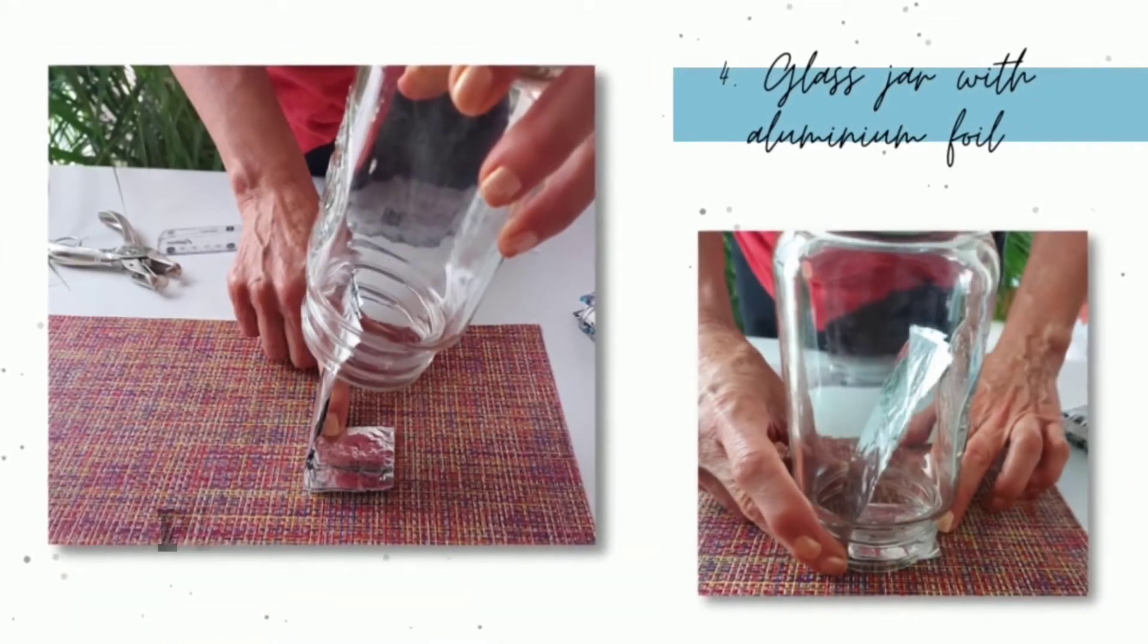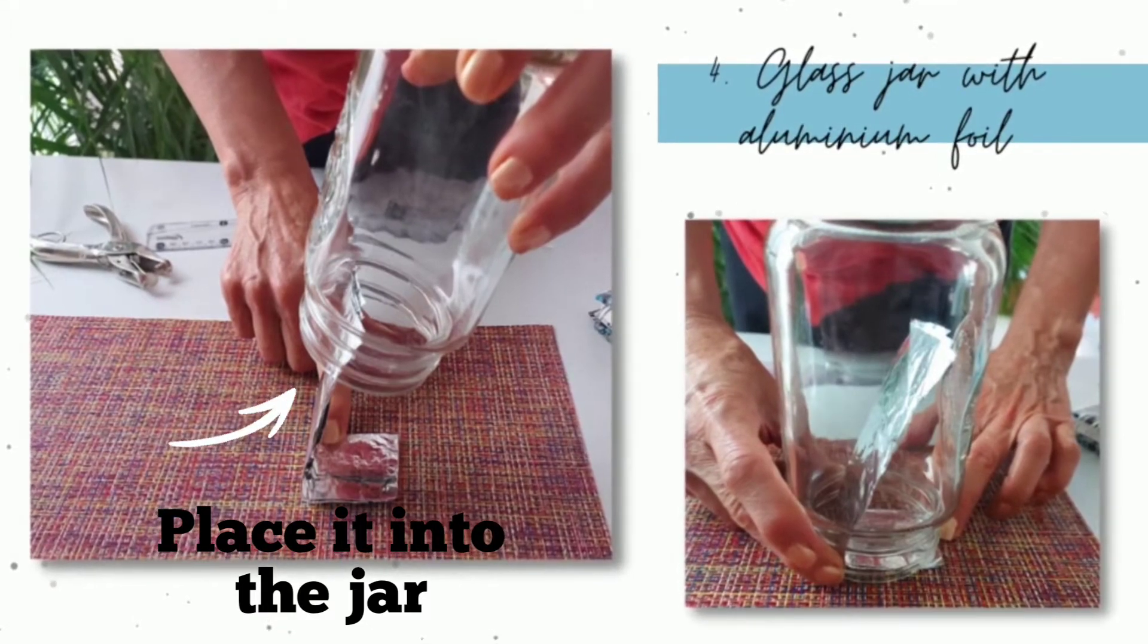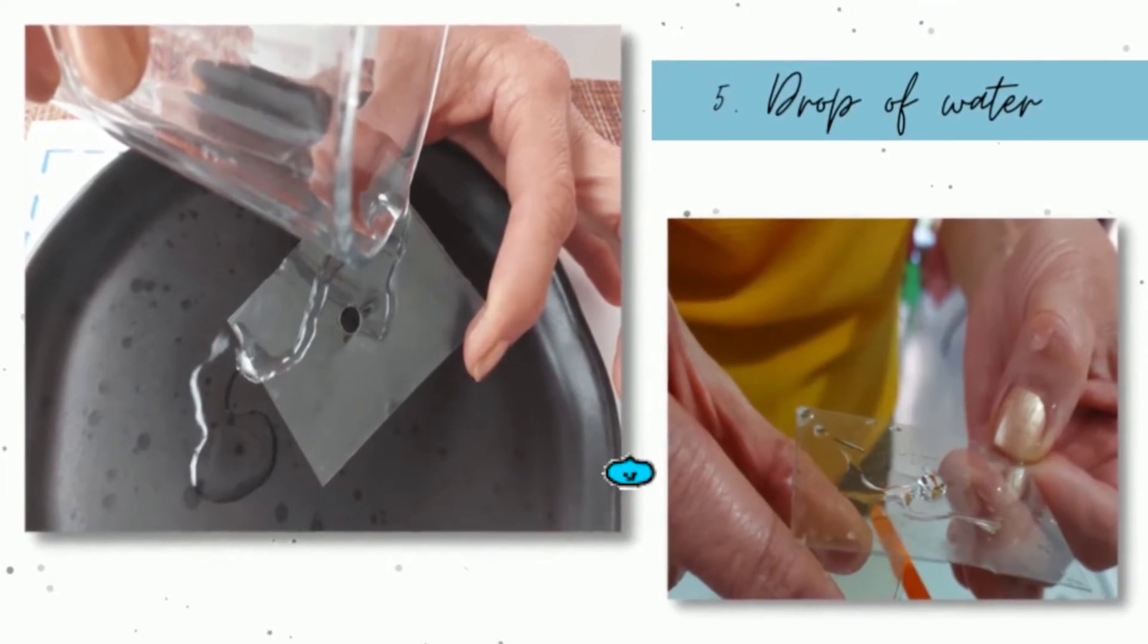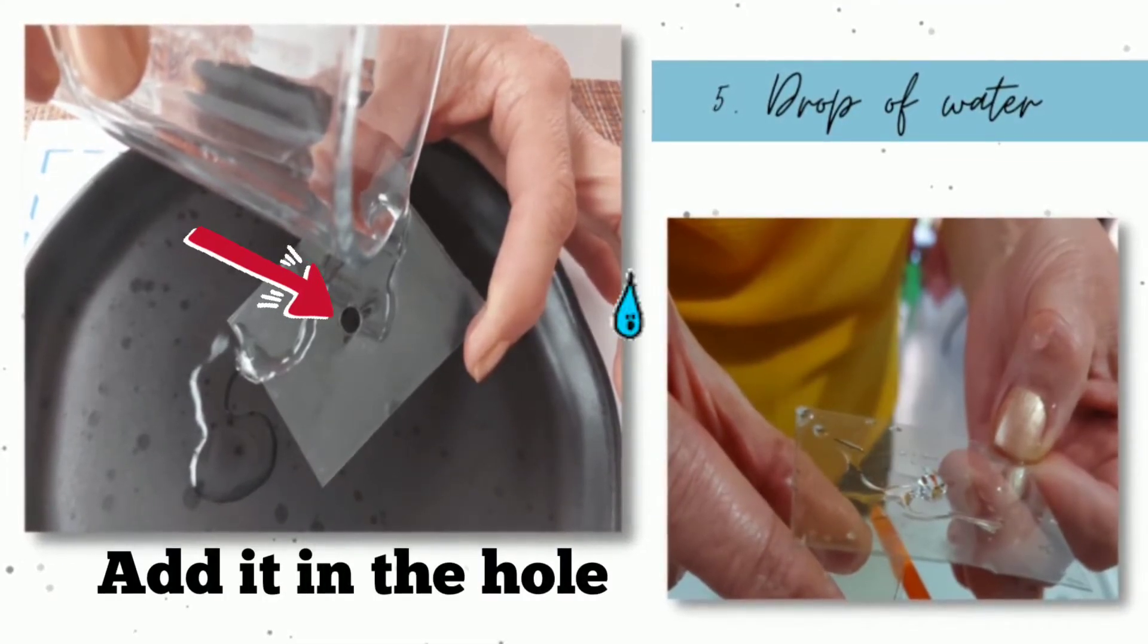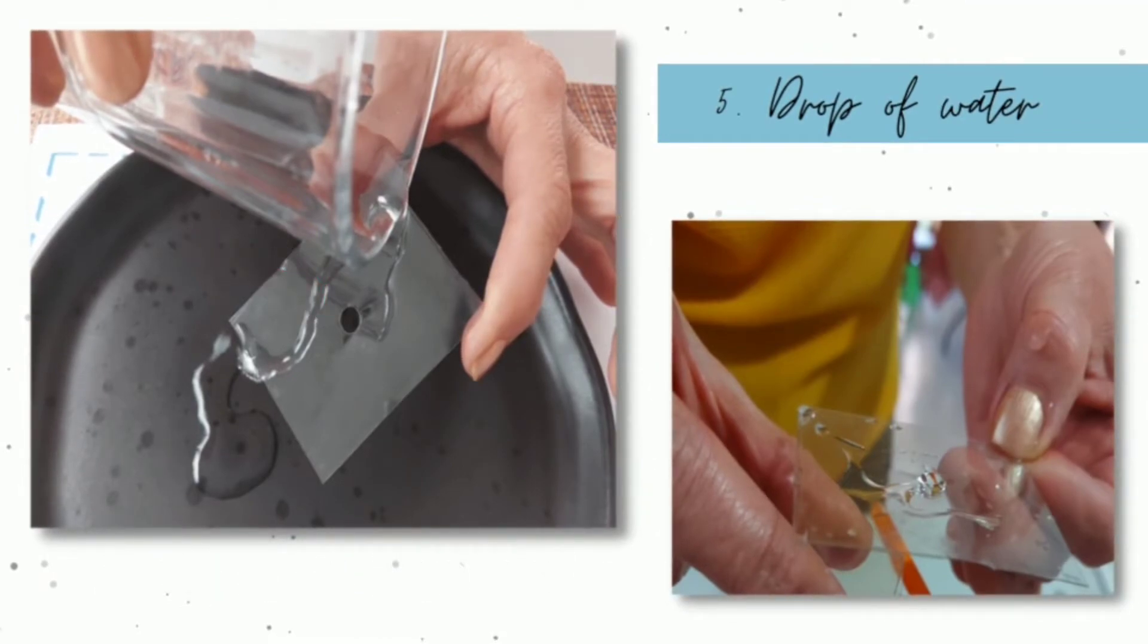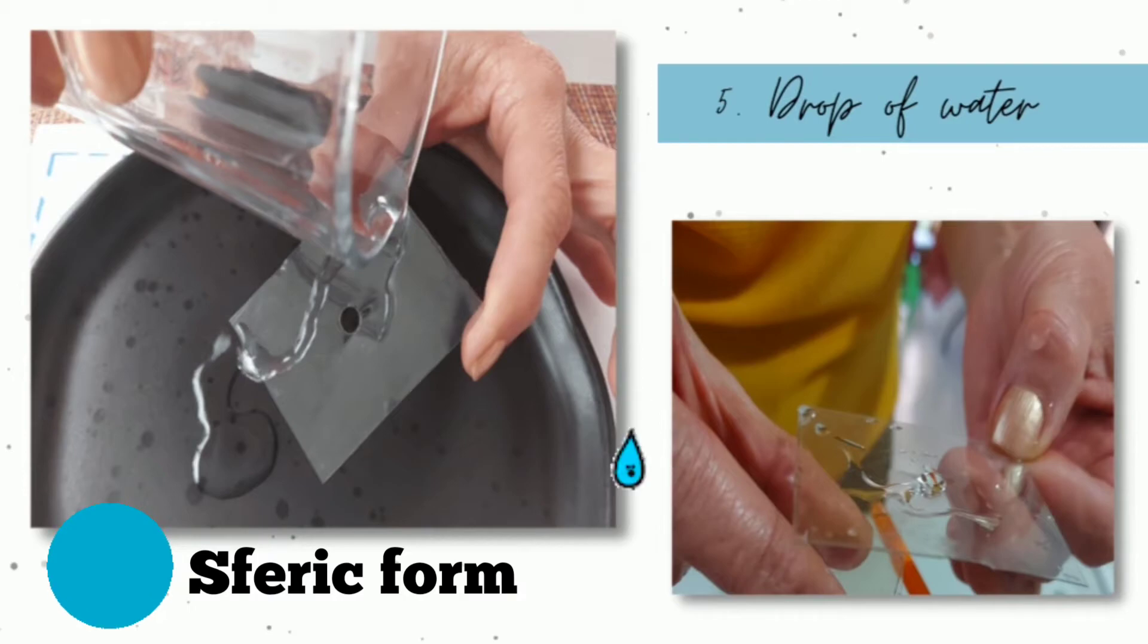The next step is to place it into the jar. After that, you will add some water in the hole of the lens holder. Your drop of water has to have a spheric form. This is the secret to make your microscope work very well.